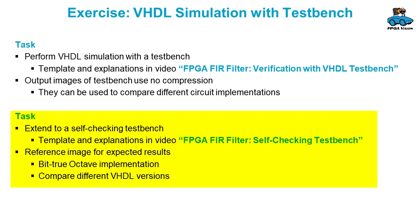For the self-checking test bench you need a reference image for the expected results. You can use the result of the bit-true Octave implementation, or you can save the result of a VHDL simulation and use it as a reference if you change the VHDL code of the design.